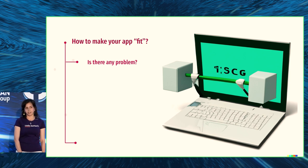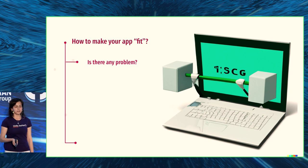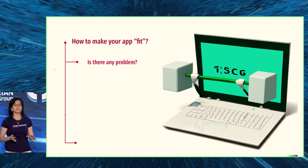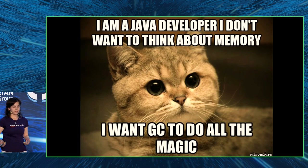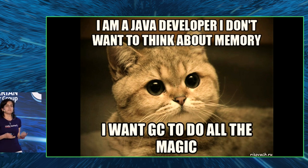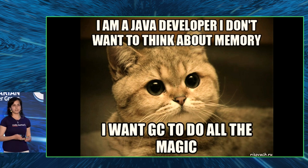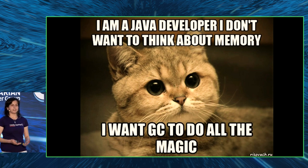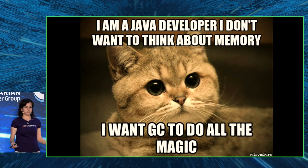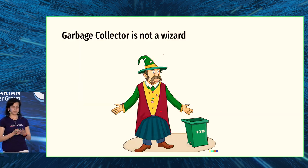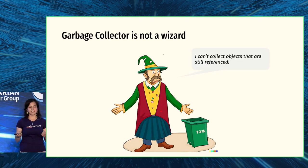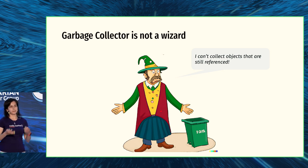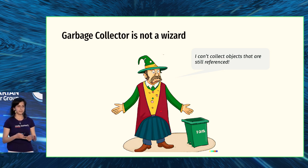I came up with an algorithm for what you can do to make your application fit. First of all, before you start doing anything, ask yourself: is there any problem? Why? Because I'm a Java developer — I don't want to think about memory. I want GC to do all the job. Using Java was the reason I stopped using C++ back in university — I didn't want to write destructors. But garbage collector is not a wizard. It's great, but it cannot collect objects if they are still referenced. It's your job to make sure that something you don't need is not referenced.